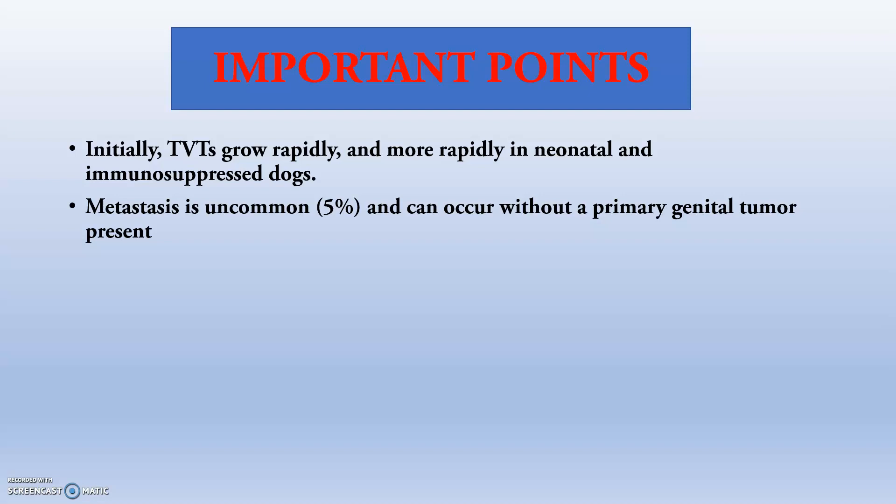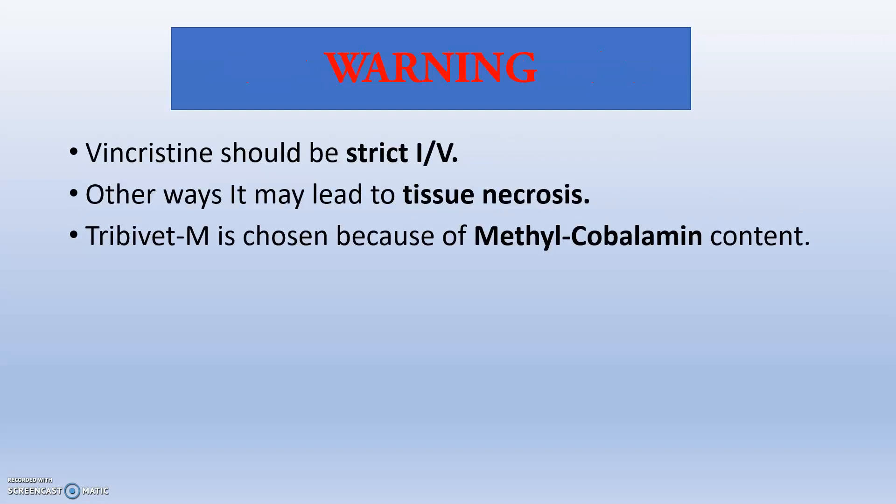Important points: TVT grows rapidly and more rapidly in neonatal and immunosuppressed dogs. Metastases are uncommon. Vincristine has mainly 3 side effects: peripheral neuropathy, gastrointestinal tract problems such as vomiting, and immunosuppressive action. Immunosuppressive action is combated by immunomodulators. GIT problems are controlled by Pantoprazole and Ondansetron. Peripheral neuropathy is addressed by methylcobalamin in Tri-B-Vet-M. Vincristine should be given strictly IV because subcutaneous or perivascular injection can lead to tissue necrosis of that area.